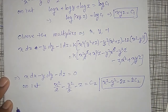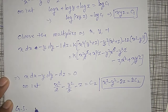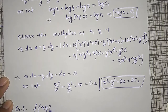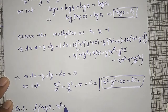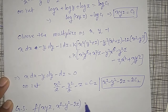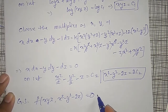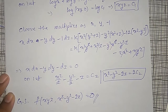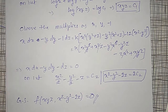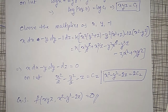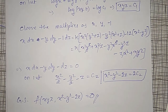Combining these two solutions gives the general solution: F(XYZ, X² - Y² - 2Z) = 0 is the required general solution.